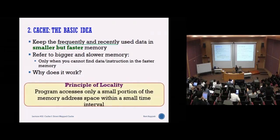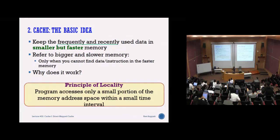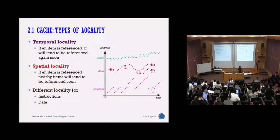Cache works because of the locality principle. In most code there are a lot of loops, arrays, structures where data is closely packed, and instructions currently executed will also be executed again in the near future. Of course, some code may just go straight through without loops, but in general there will be many loops and arrays. We can make use of this to improve memory access. In terms of locality there are three basic types: temporal, spatial, and others.